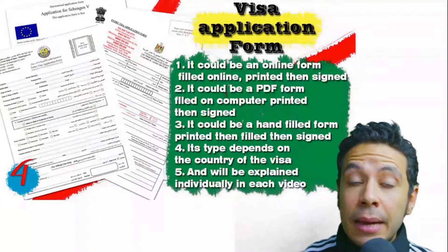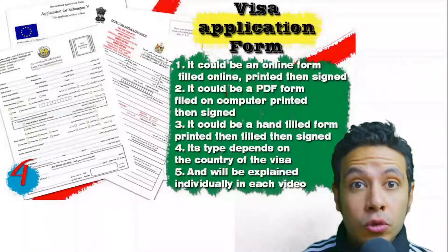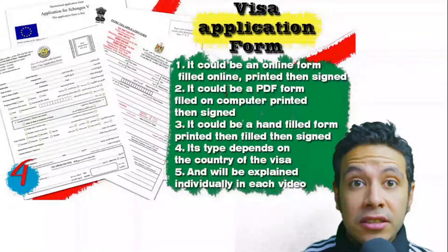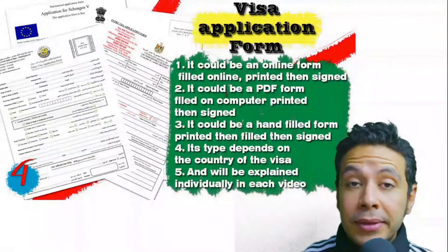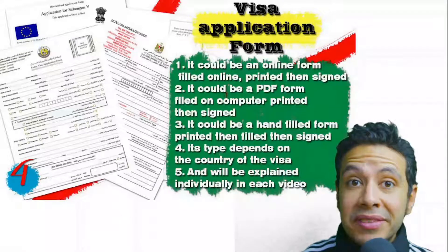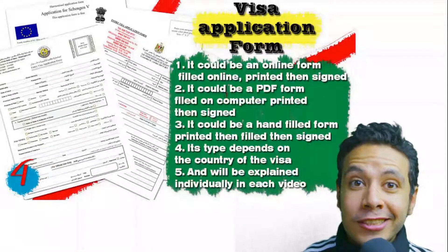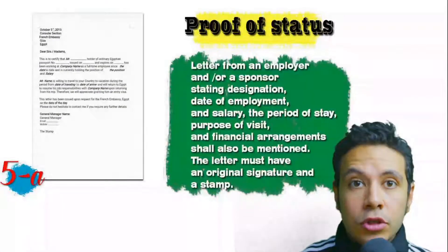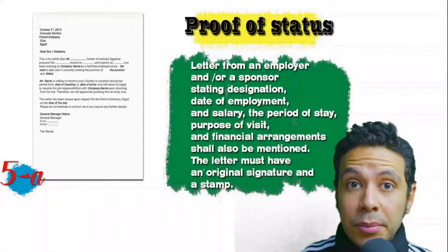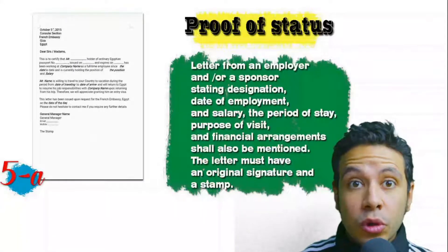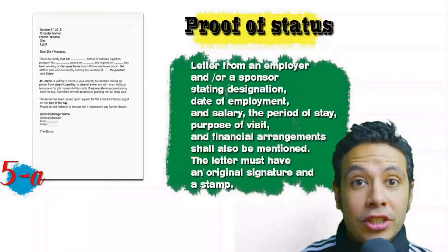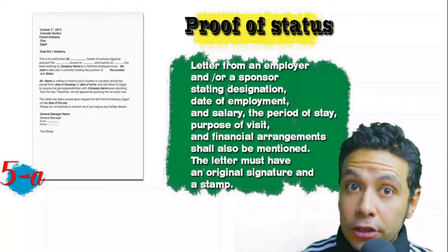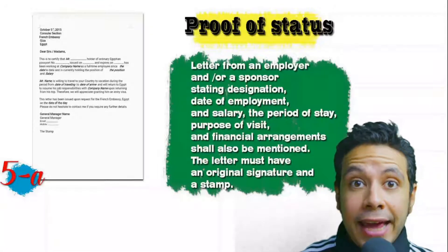For the visa application form, generally you need only one copy, but sometimes two or three copies are required. Forms differ from country to country — generally you print and fill it manually, but many countries now offer an online platform to fill it and then print and sign it. In most visa application processes you will be required to provide proof of status. If you are an employee, provide a letter from your employer or HR department mentioning your name, work details, salary, address, and contact numbers. All letters must have an original signature and stamp.